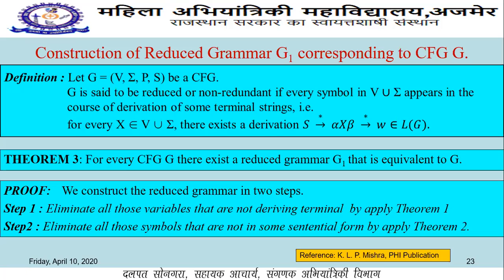Before starting this, we just understand what the actual meaning of reduced grammar is. So consider we have a given grammar G, that is a context-free grammar. This G is said to be reduced or non-redundant if every symbol from the set V union sigma appears in the course of derivation for some terminal string. We can understand this by some notation in formal language.